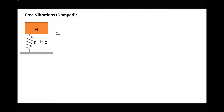Now we have one configuration for a mass spring damper system, and an alternative configuration would be something like this. The important thing in both of these systems is the force from the spring is acting directly on the mass, and the force applied by the damper is also being applied directly to the mass. We see the same thing in the second system. So the equations that apply to these two systems are exactly the same.